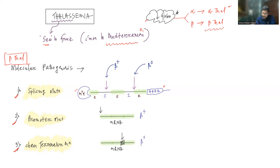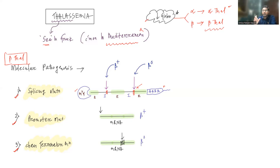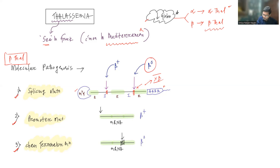Splicing mutations can be of two types. If the mutation affects the junction between intron and exon, the spliceosome cannot detect this area, so the intron cannot be removed. Normal splicing cannot happen, meaning no beta globin will be produced. This condition of no beta globin production is denoted as beta zero.